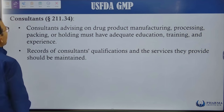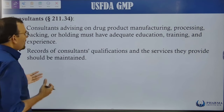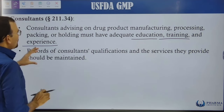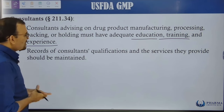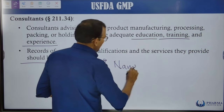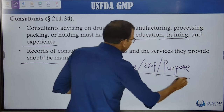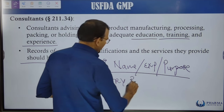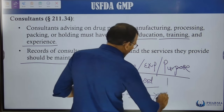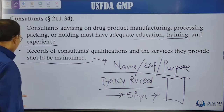Where consultants are involved in drug manufacturing, they must have adequate education, appropriate training, and suitable experience to guide on the manufacturing process. Records of consultants' qualifications and services provided should be maintained — including the consultant's name, firm, experience, purpose of consultation, entry and exit records, and signatures on documents as required — as proof that the consultant verified the process.